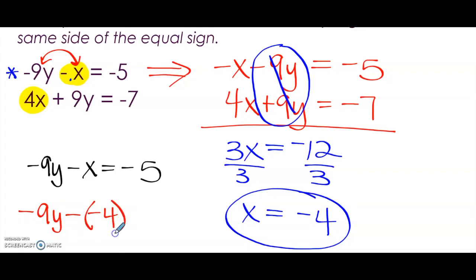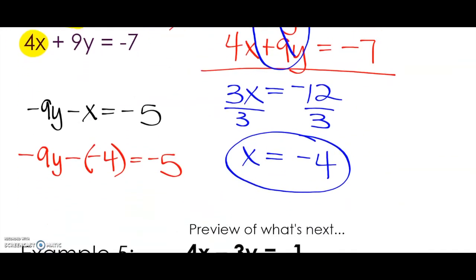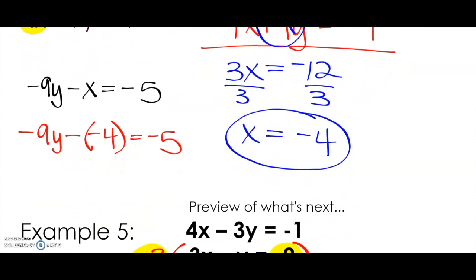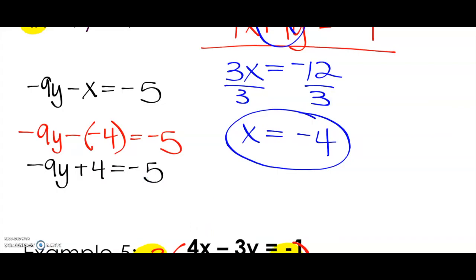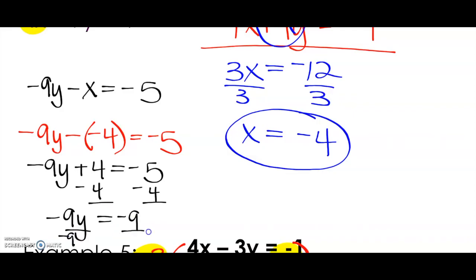We need both of those signs — be careful when you're substituting in. Let's use some integer rules here. I get negative 9Y plus 4 equals negative 5. Then we are going to subtract 4 from both sides. We get negative 9Y equals negative 9. Divide by negative 9 — we get Y equals 1.